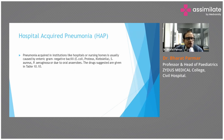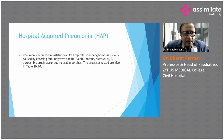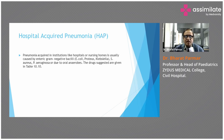Hospital-acquired pneumonia: Pneumonia acquired in an institution such as a hospital or nursing home is usually caused by gram-negative bacilli including E. coli, Proteus, Klebsiella, and Staphylococcus aureus, Pseudomonas aeruginosa, or due to oral anaerobes. The suggested drugs are given in the following table.